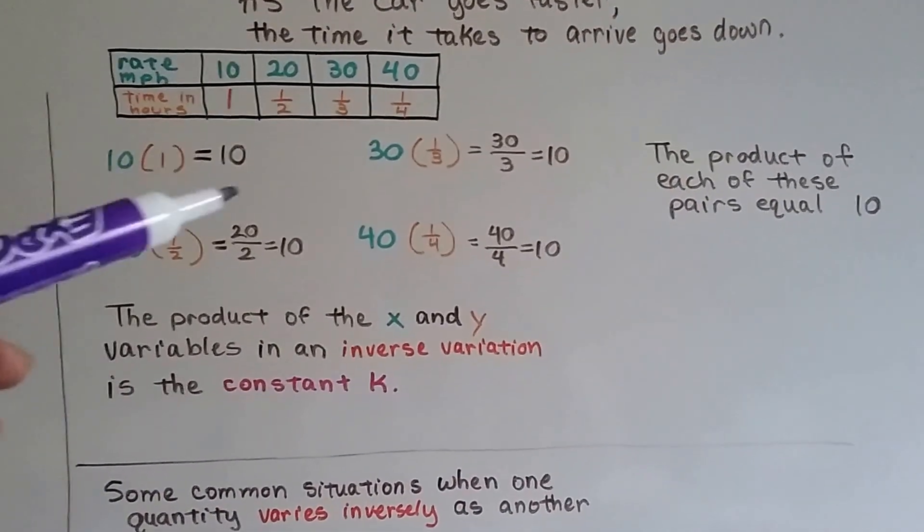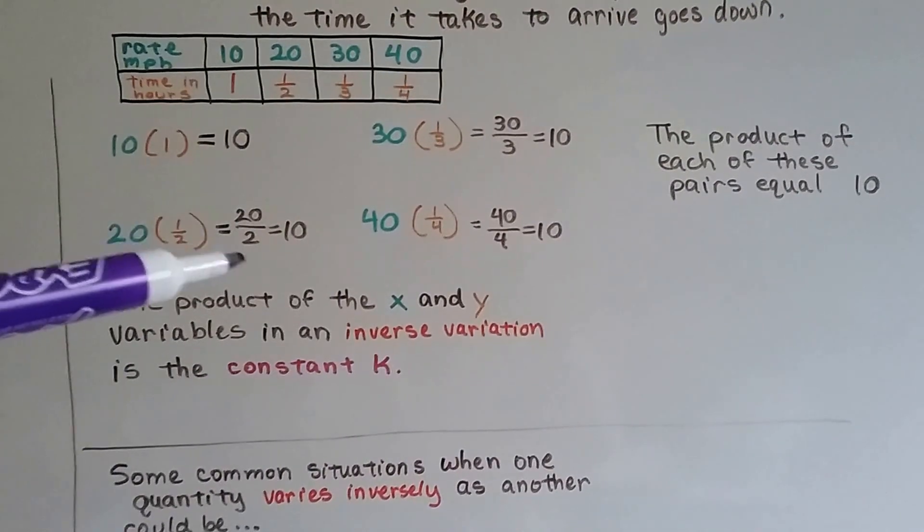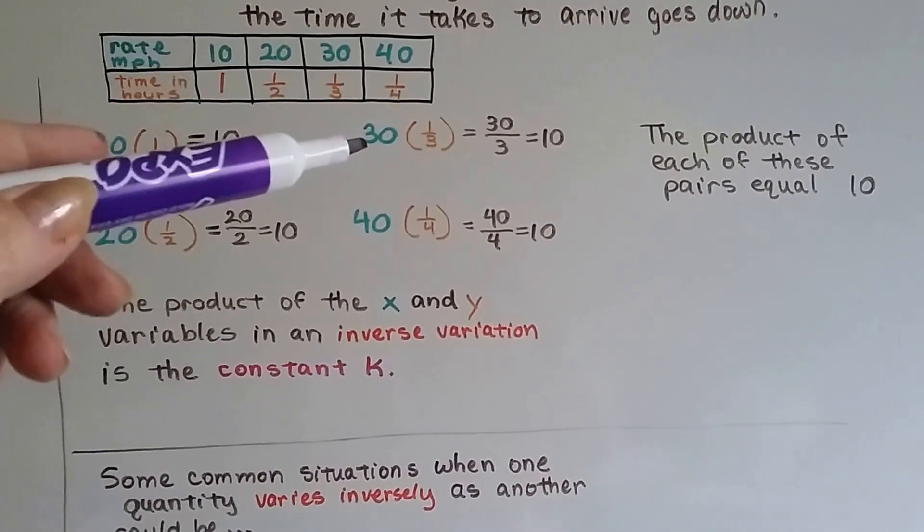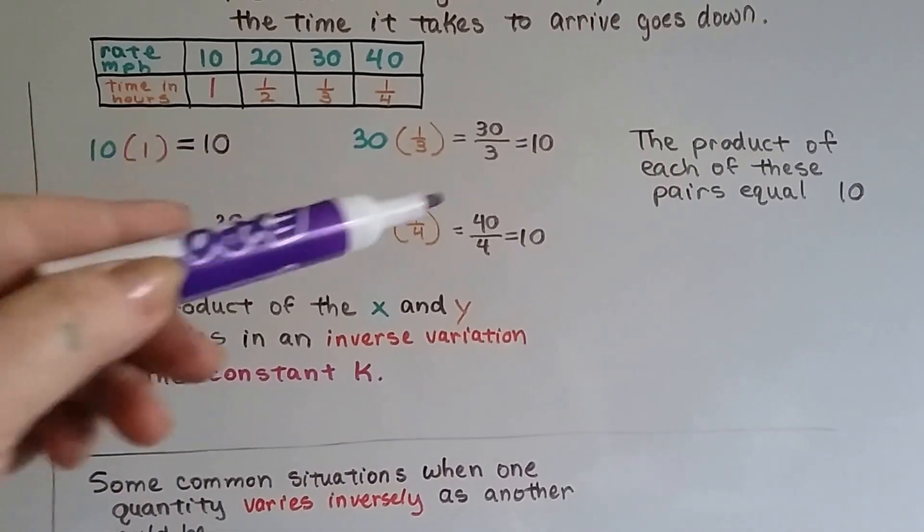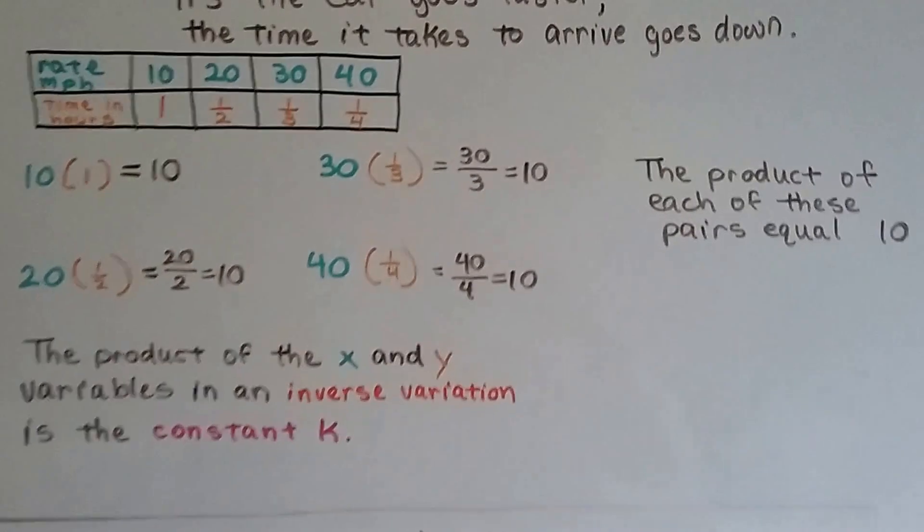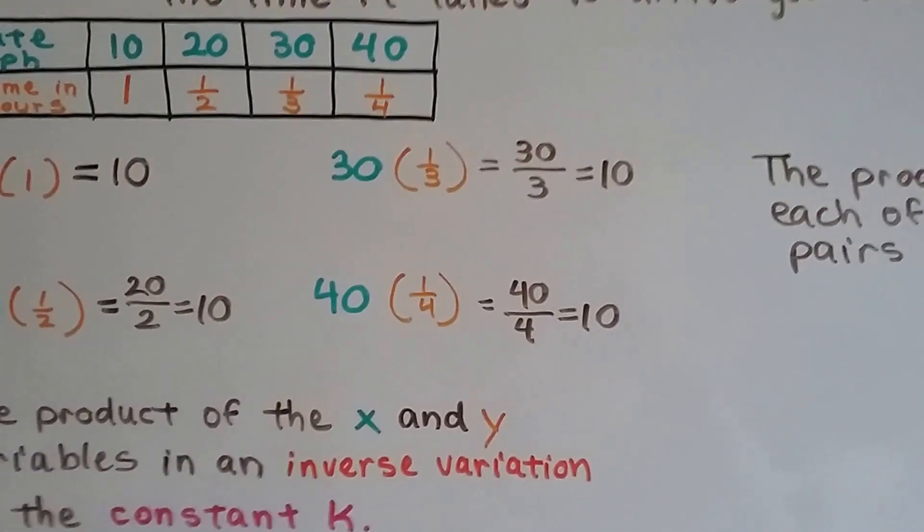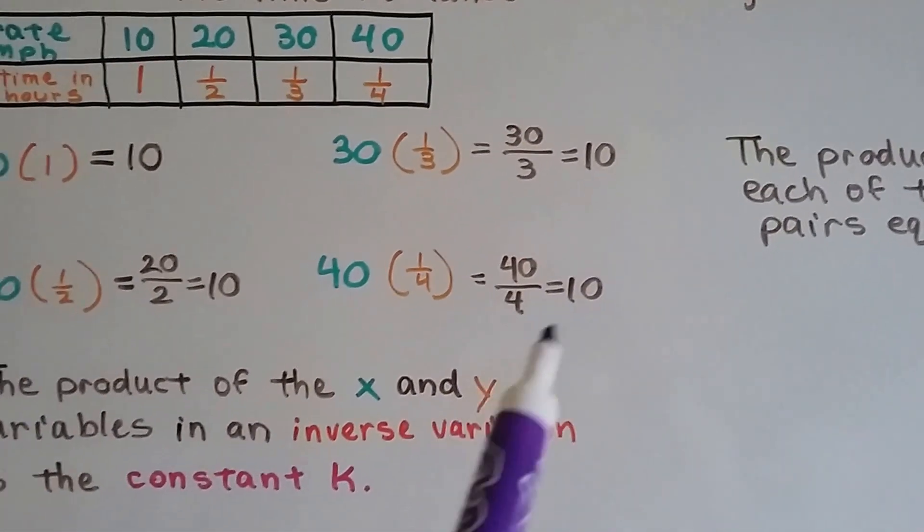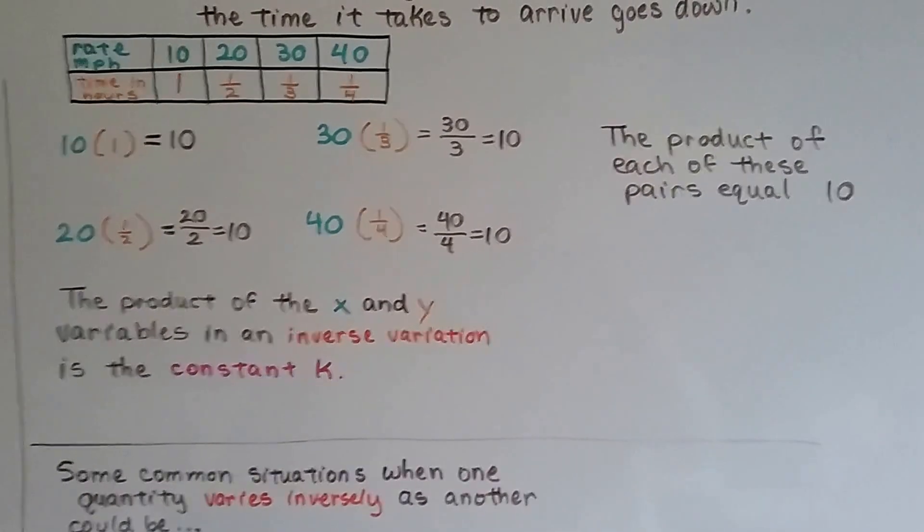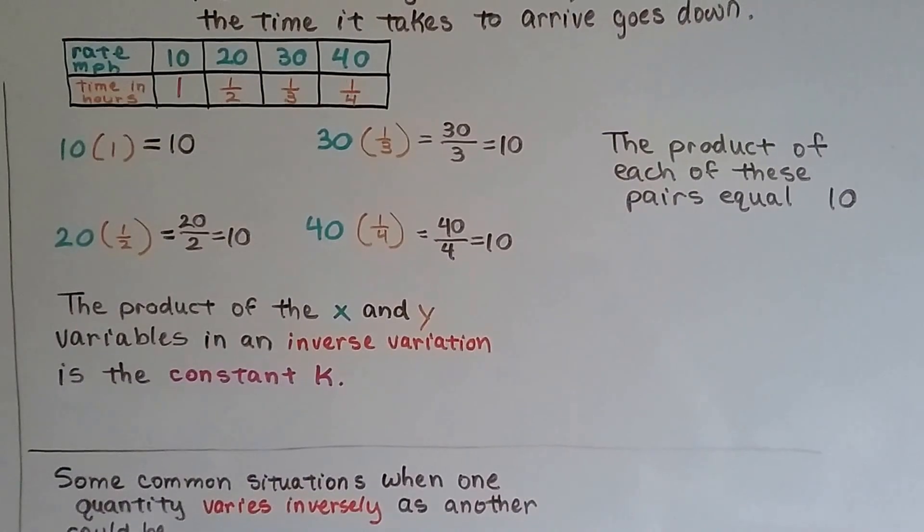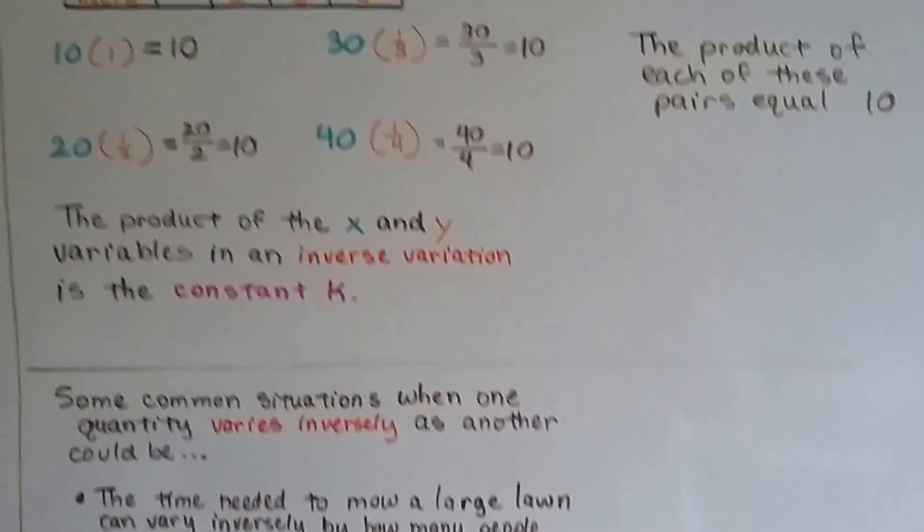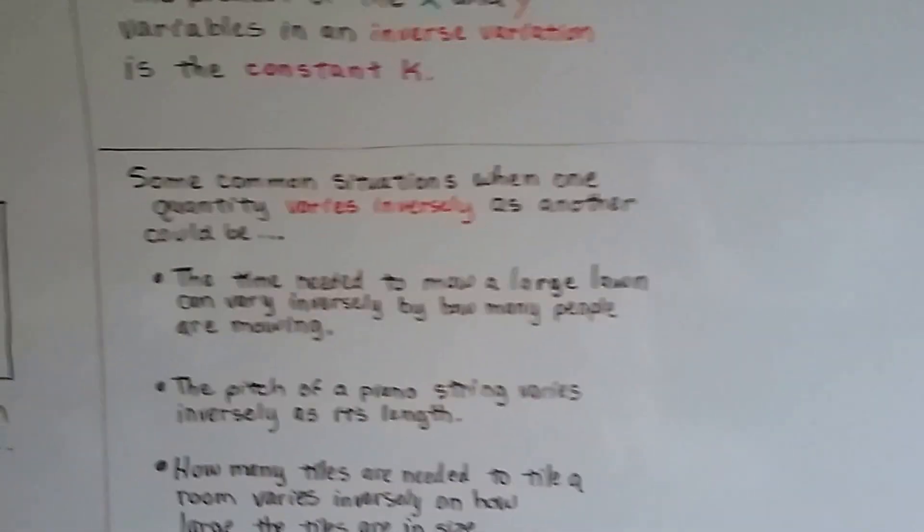10 times 1 is 10. 20 times a half is 20 halves, which equals 10. 30 times a third is 30 thirds, 30 over 3, that equals 10. And the 40 times 1 fourth is going to equal 40 over 4, or 10. See how that happened? The product of the x and y variables in an inverse variation is the constant k. So we know the constant is 10. That's the k value.